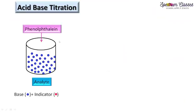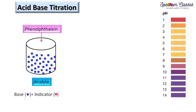Now, coming to the next question: how does the indicator work? Here I am showing a small animation to explain how acid-base indicators work. The pH scale runs from 1 to 14. pH equals minus log base 10 of [H⁺], meaning it is the negative logarithm of hydrogen ion concentration — with lowercase 'p' and uppercase 'H'. These points are important to remember.